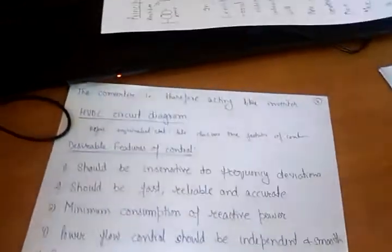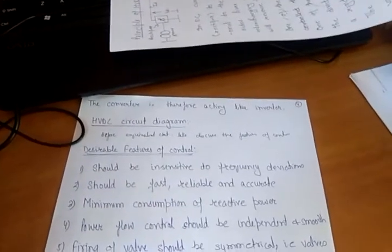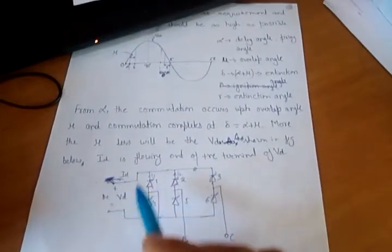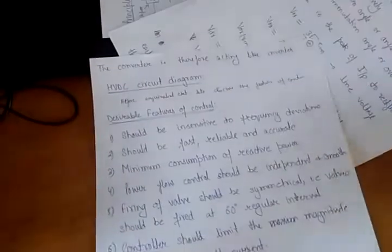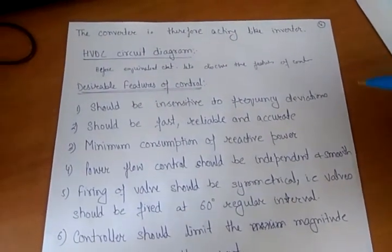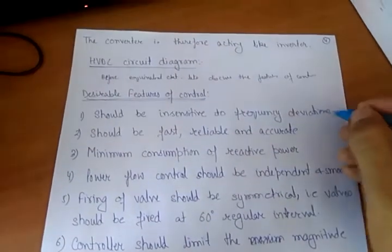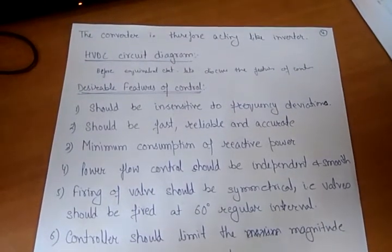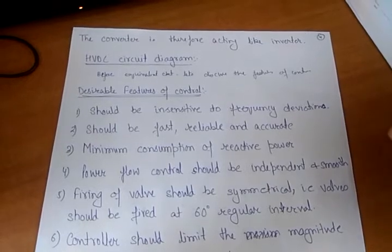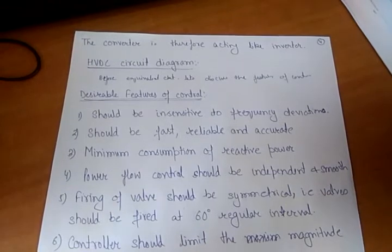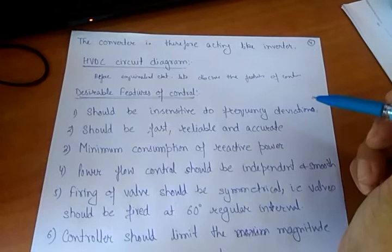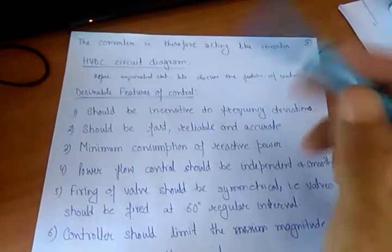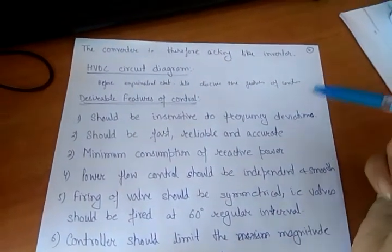Before discussing the equivalent circuit of HVDC, let us discuss the desirable features of the controls. The first desirable feature is that the control should be insensitive to frequency deviation. If frequency deviation occurs on the AC side, it may affect controller performance, so we want the controller to operate satisfactorily and not respond to frequency deviations in the system.